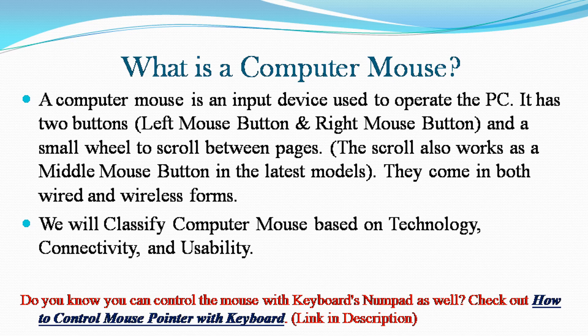A computer mouse is an input device used to operate the PC. It has two buttons and a small wheel to scroll between pages. The scroll also works as a middle mouse button. They come in both wired and wireless forms.